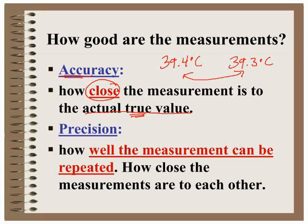Precision is how well that measurement can be repeated. How close the measurements are to each other. So to be precise, you need to have repeated consistent data.